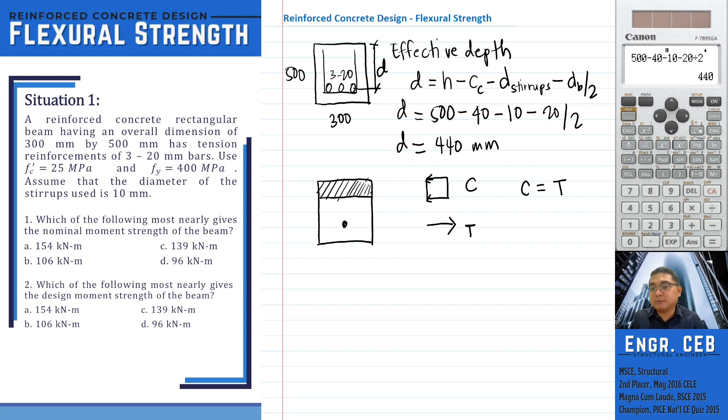In getting the compressive force from the concrete, that is 0.85 FC prime times the width of the beam times the depth of compression block. Our symbol for the depth of compression block is A. We equate this to the number of tensile reinforcements, so that is As times FY.